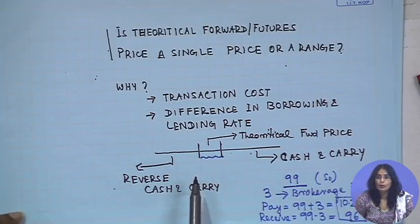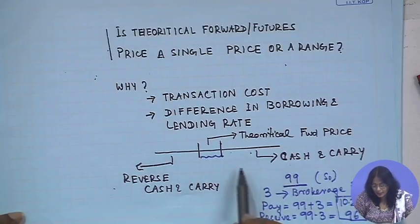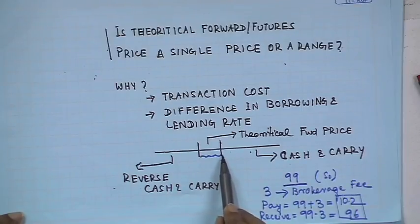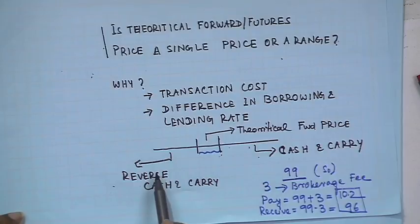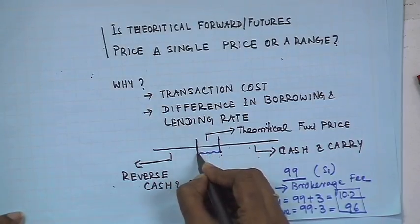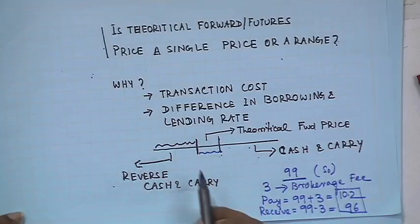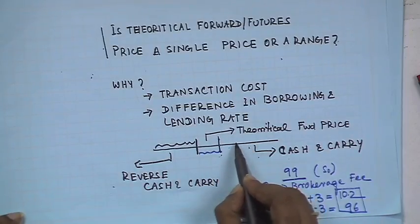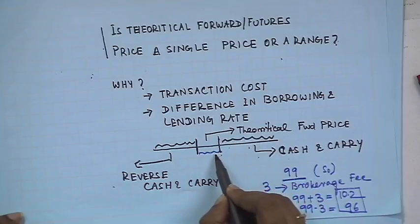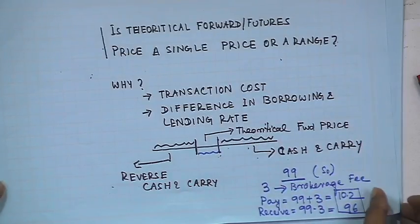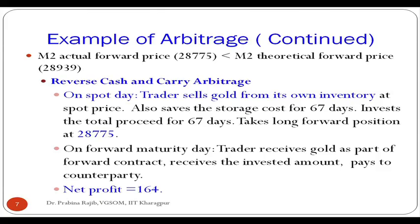The theoretical price is not going to be a single price because of differences in borrowing and lending rates, transaction costs, and bid-ask spread. All of this is factored in to calculate a range. If the actual price is greater than the upper bound, we will have cash and carry arbitrage. If the actual price is less than the lower bound, we will have reverse cash and carry arbitrage. Let me take a simple example to show why arbitrage operates over a range and not a single price point.